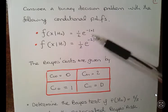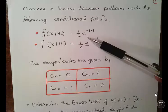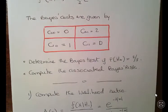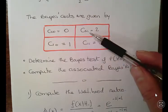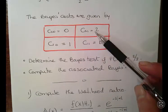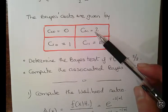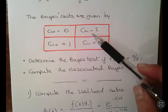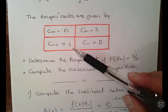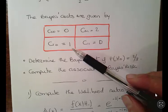Now the Bayes costs are given as follows: C00, C01, C10, C11. So this is the cost of choosing zero when the correct answer was H1, and this is the cost of choosing H1 when the correct answer was zero.